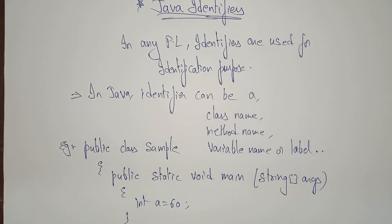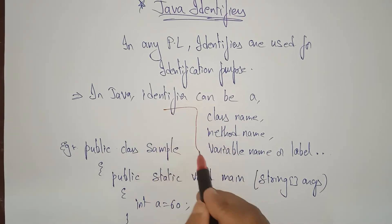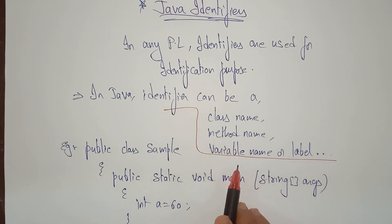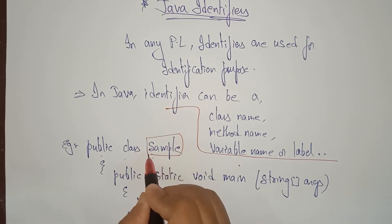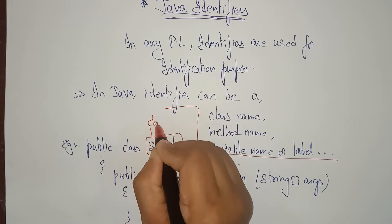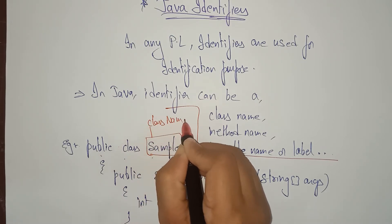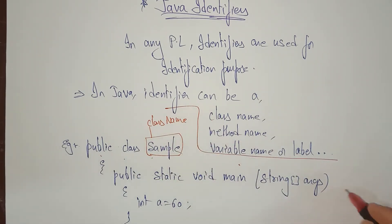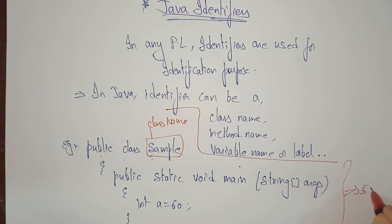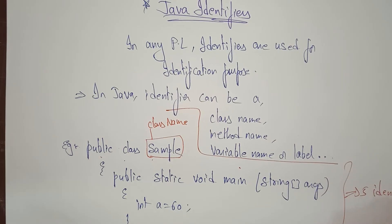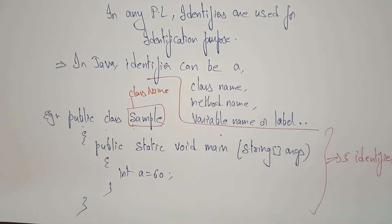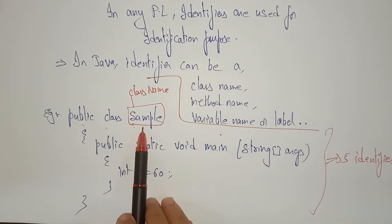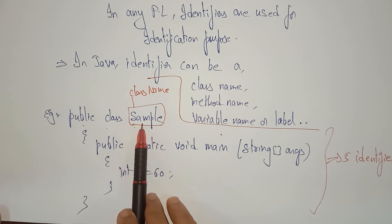So in Java, identifiers can be a class name, method name, variable name, or a label. Here, 'public class Sample' — Sample is a class name. In this simple code snippet, there are a total of five identifiers. Can you guess what the five identifiers are?